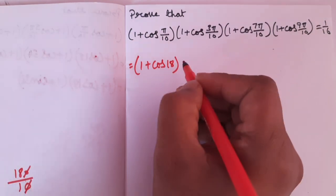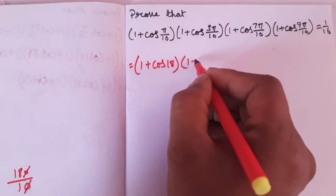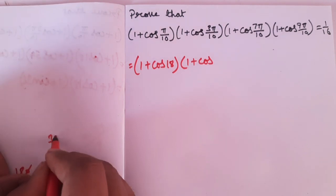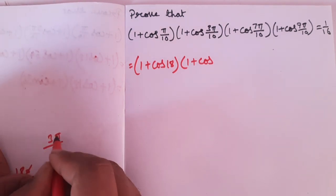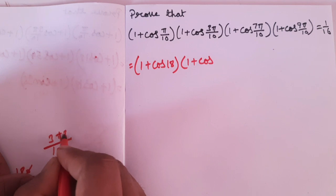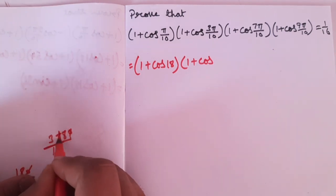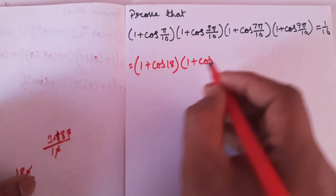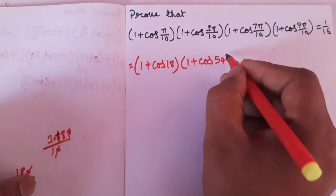Next, 1 plus cos(3pi/10). Pi by 180, so pi by 180 — E0, E0 cancel. 3 into 18.